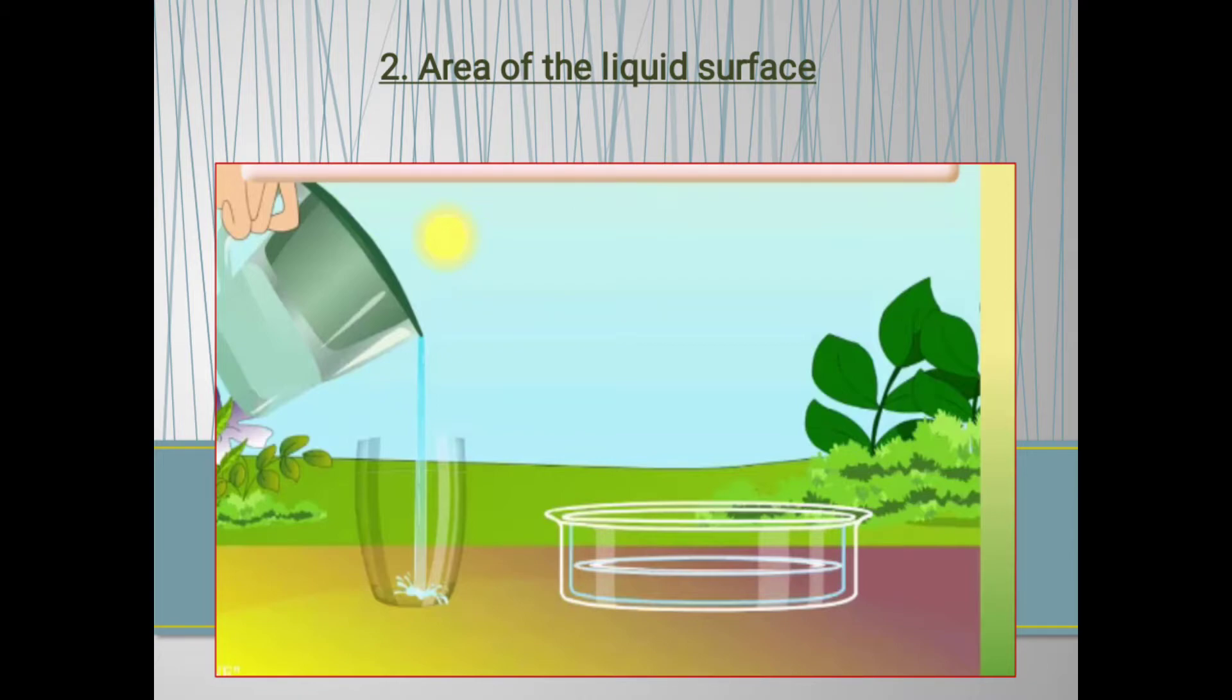You will find that there is more water left in the glass. When you leave a glass and a plate with the same amount of water in the sun for the same time period, the water will evaporate differently.